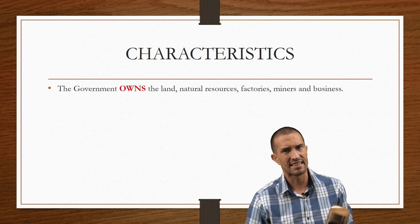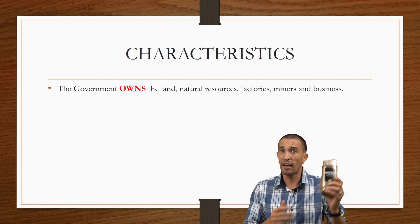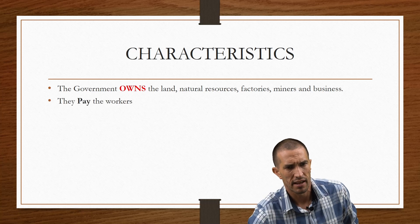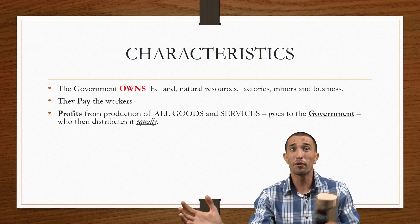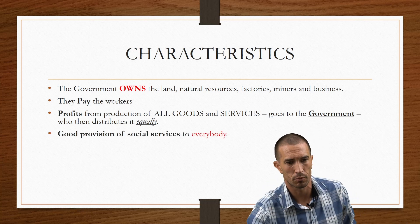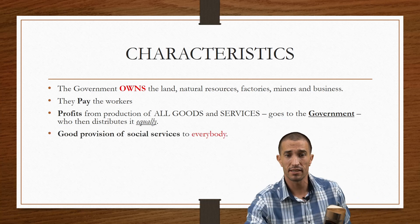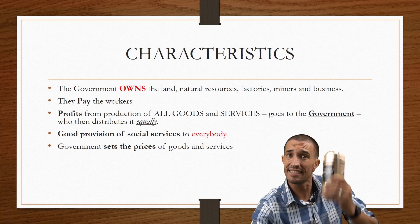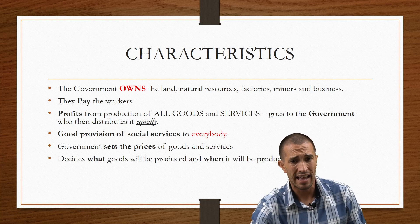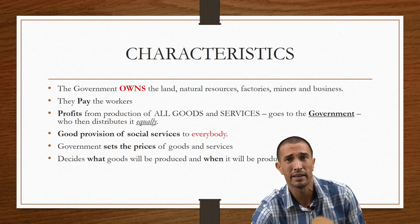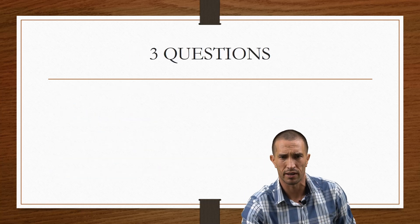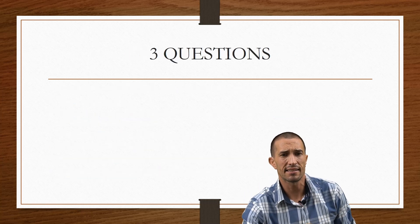The characteristics: the government owns the land, natural resources, and factories. They pay the workers, all profit goes to the government, and it is distributed equally. They provide goods and services to everyone and set the prices of goods and services — you can see this is a monopolistic market. They decide what to produce and when it will be produced.